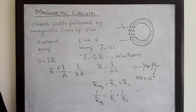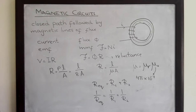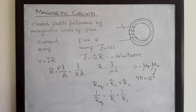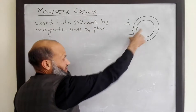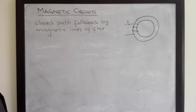Since magnetic circuits are quite similar to electrical circuits, the strategy to analyze magnetic circuits is the same as that used for electrical circuits. The convenient approach is to first draw the equivalent electrical circuit. Once we have the equivalent electrical circuit, we can easily analyze the magnetic circuit. For this particular magnetic circuit, we shall first draw the analog electrical circuit.